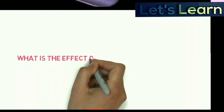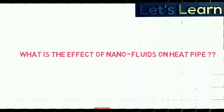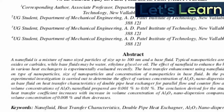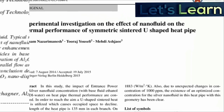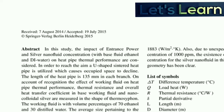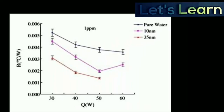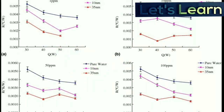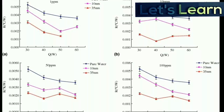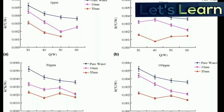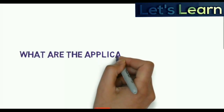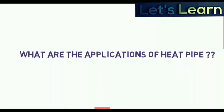Now let's see the effect of nanofluids on the heat pipe. According to many research and review papers, it has been concluded that nanofluids have been positively affecting heat pipes. The efficiency of the heat pipe has been increasing and the thermal resistance has been decreasing due to the presence of nanofluids in the heat pipe.